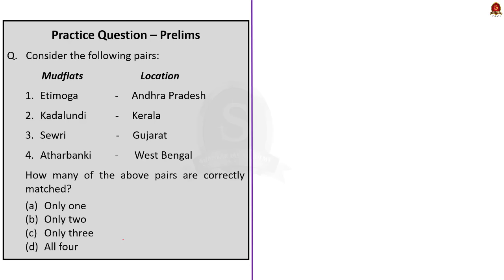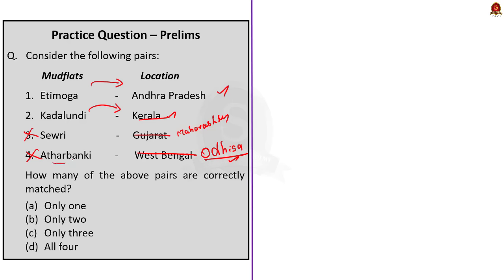The first question is a pair-based question matching mud flats with locations. The first pair is correctly matched — Etimoga is located in Andhra Pradesh. The second pair is also correctly matched — Kadalundi is located in Kerala. The third pair is wrongly matched — Swari is not located in Gujarat; it is actually located in Maharashtra. The fourth pair is also wrongly matched — Adharbanki is not located in West Bengal; it is actually located in Odisha. So two pairs are correctly matched and two are incorrectly matched. The correct answer is option B, only two.